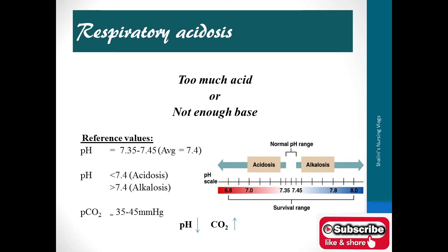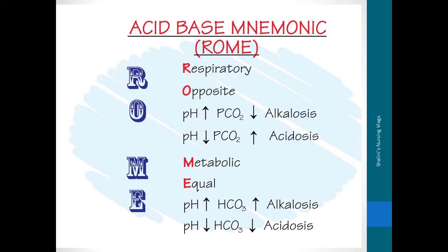Respiratory acidosis, in other words, means there is too much acid or not enough base. The reference value of pH is 7.35 to 7.45 — the average is taken as 7.4. If pH is less than 7.4 we say it is acidosis, and if it is more than 7.4 we say it is alkalosis. The reference value of PaCO2 is 35 to 45. In respiratory acidosis we look at pH — it is reduced — and there is retention of carbon dioxide, which is an acid.